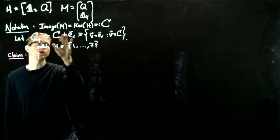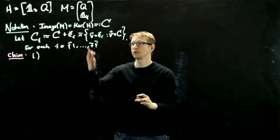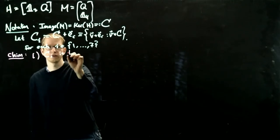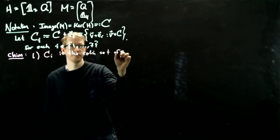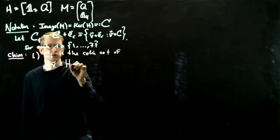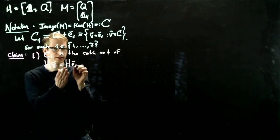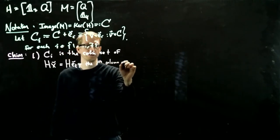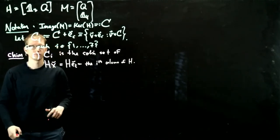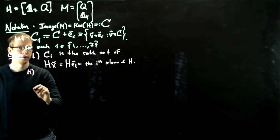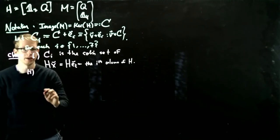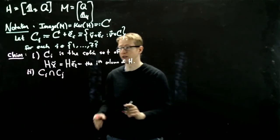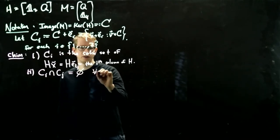So the first thing is that we already know that C is the solution set of a homogeneous system, namely it's the kernel of H. C_i is also the solution set of some system, though it's no longer homogeneous. C_i is the solution set of the inhomogeneous system HX equals HE_i, where this is the ith column of H. Secondly, if we take any two of these different subsets, C_i and C_j, then C_i intersect C_j turns out there are none. It's the empty set for all i not equal to j.